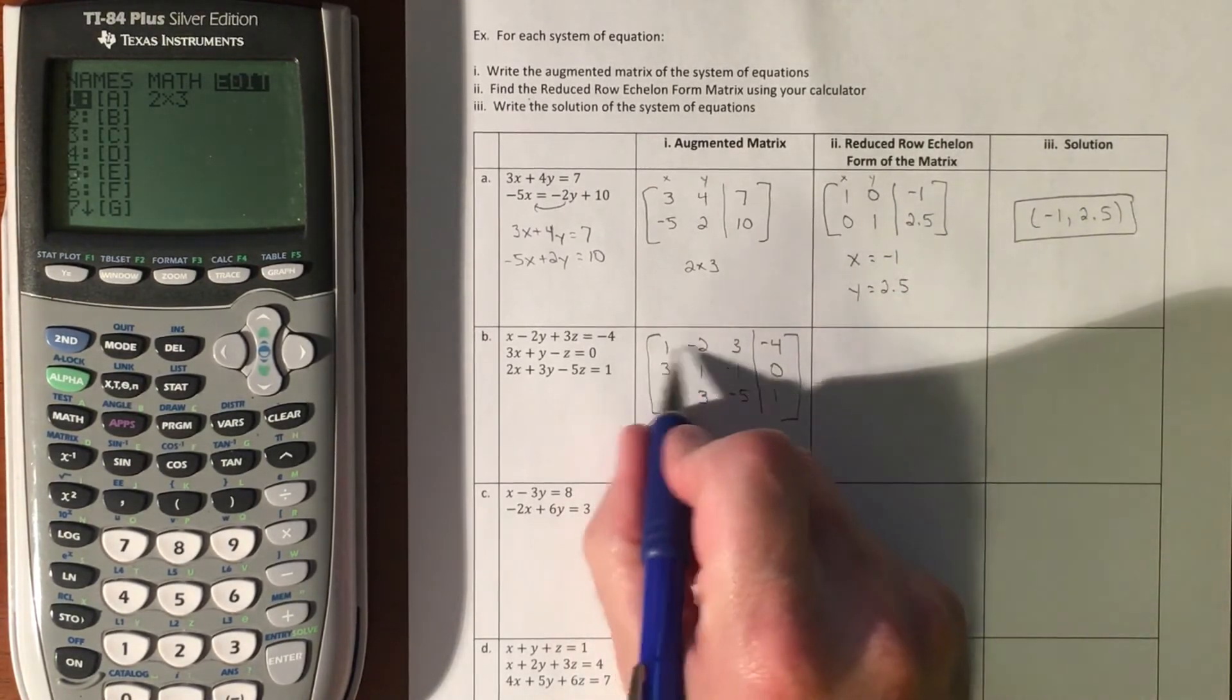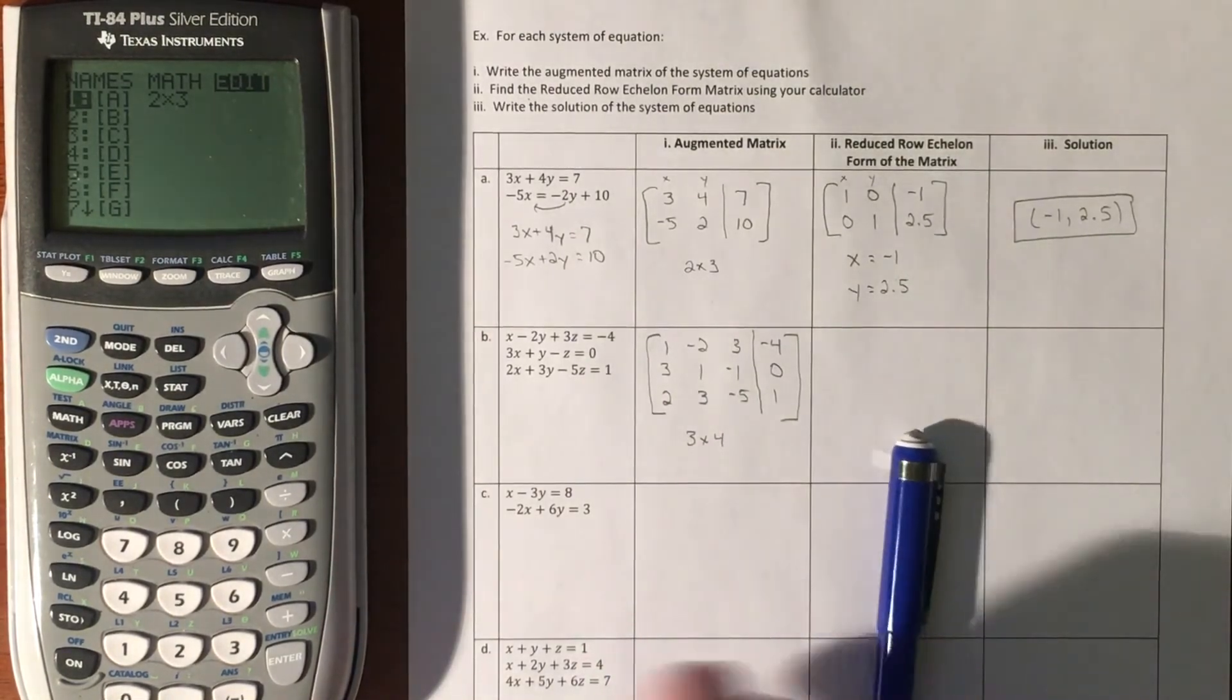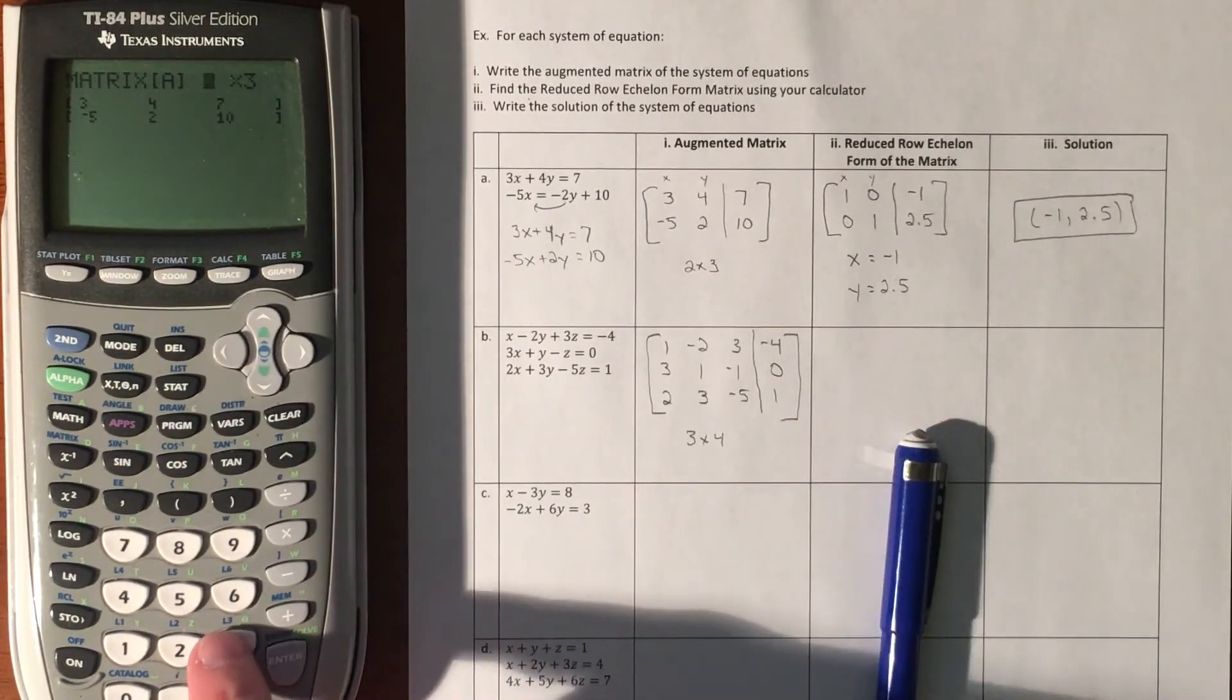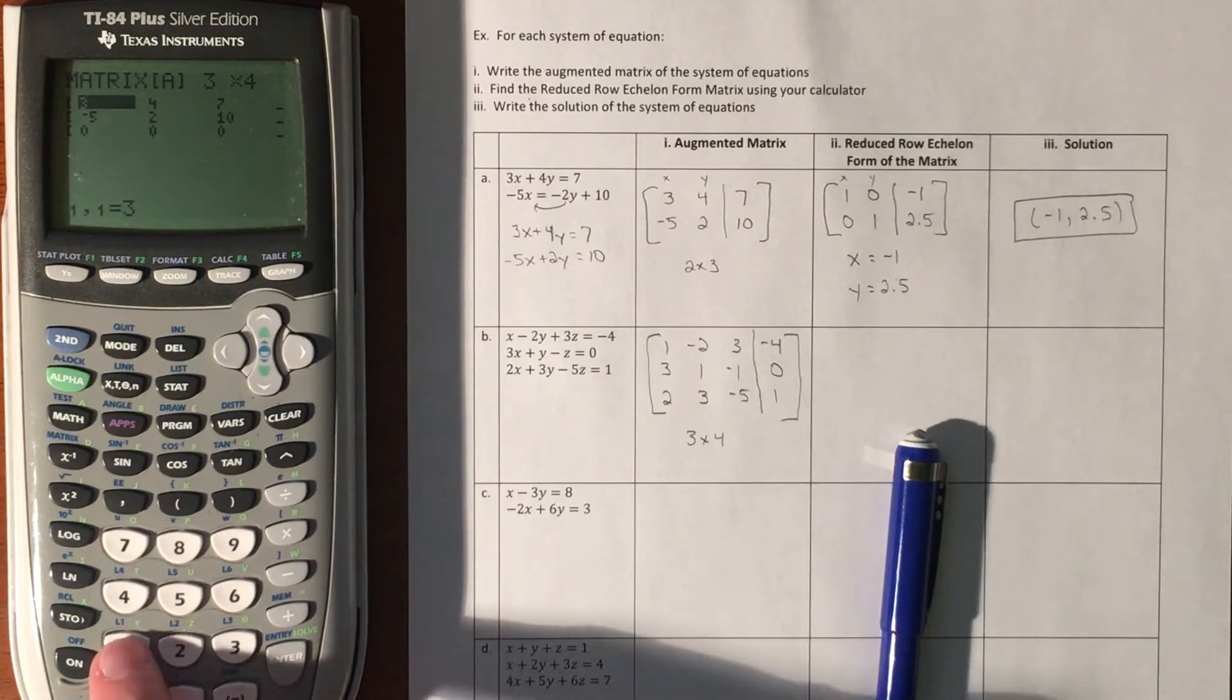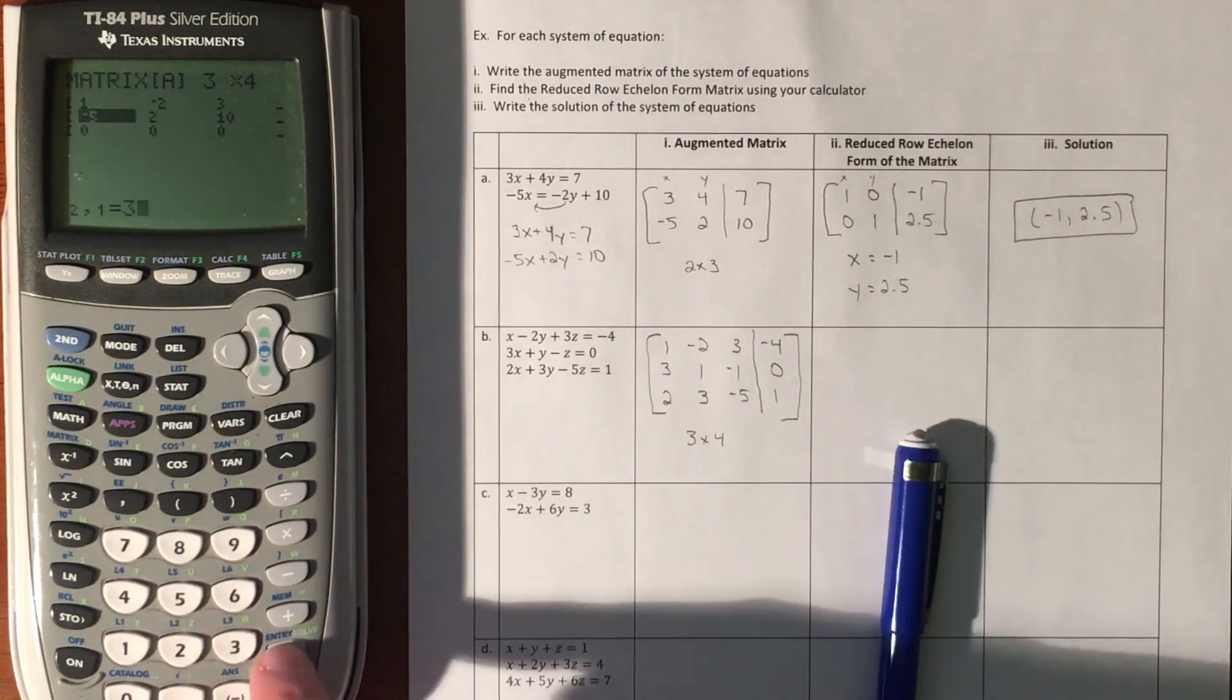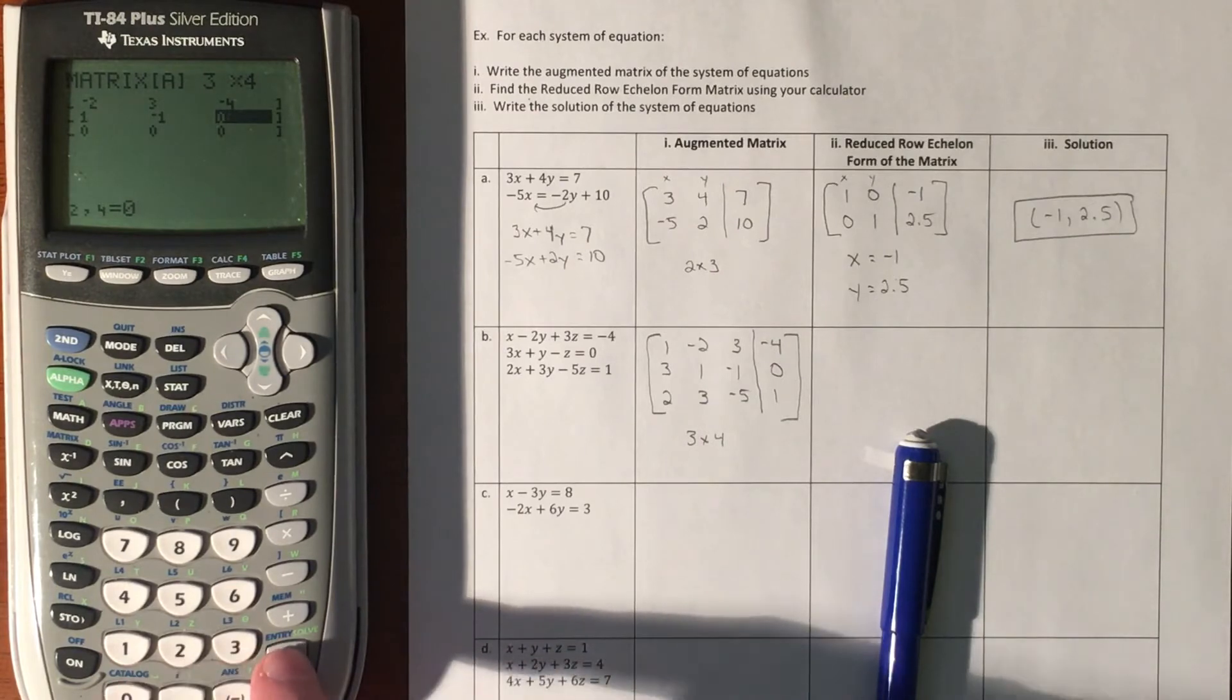That is 3 rows by 4 columns. If I go in here and edit the same thing, I'm going to write over that one. I'll go 3 rows by 4 columns and enter in all my information: 1, negative 2, 3, negative 4, and the next row 3, 1, negative 1, 0, and 2, 3, negative 5, 1.